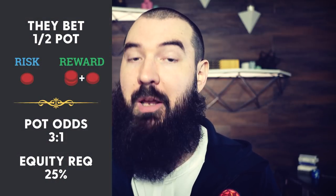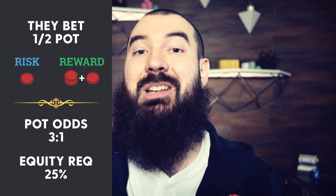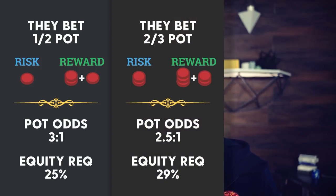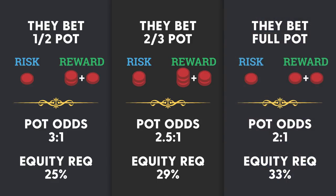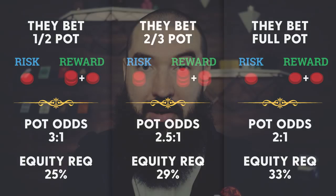Memorize these three numbers. If your opponent bets half pot, you're getting three to one pot odds and have a 25% equity requirement. If your opponent bets two-thirds pot, you're getting 2.5 to one pot odds. If your opponent bets full pot, you're risking one unit to win two units — two to one pot odds — and a 33% equity requirement. Please memorize these.